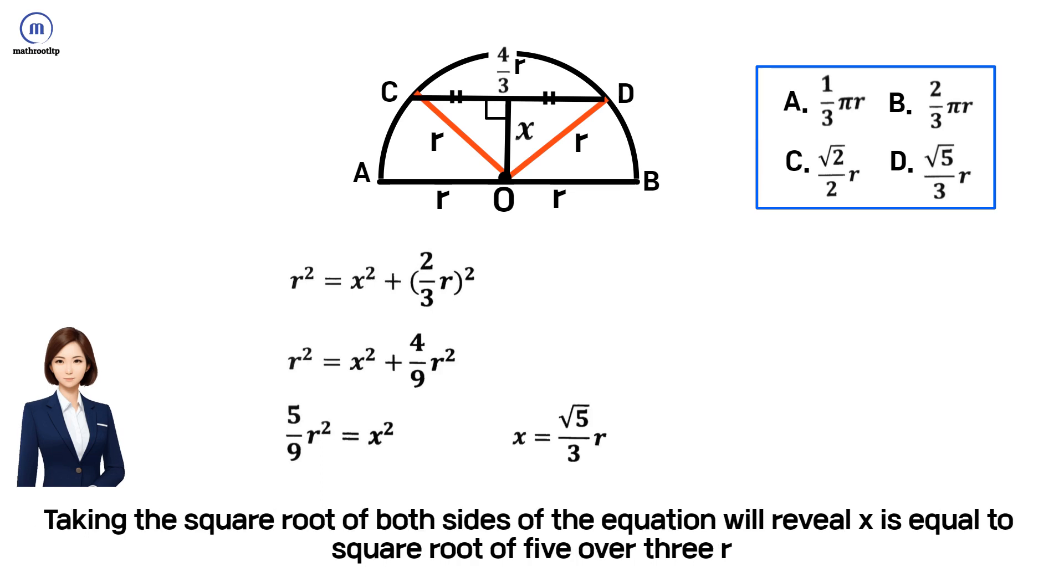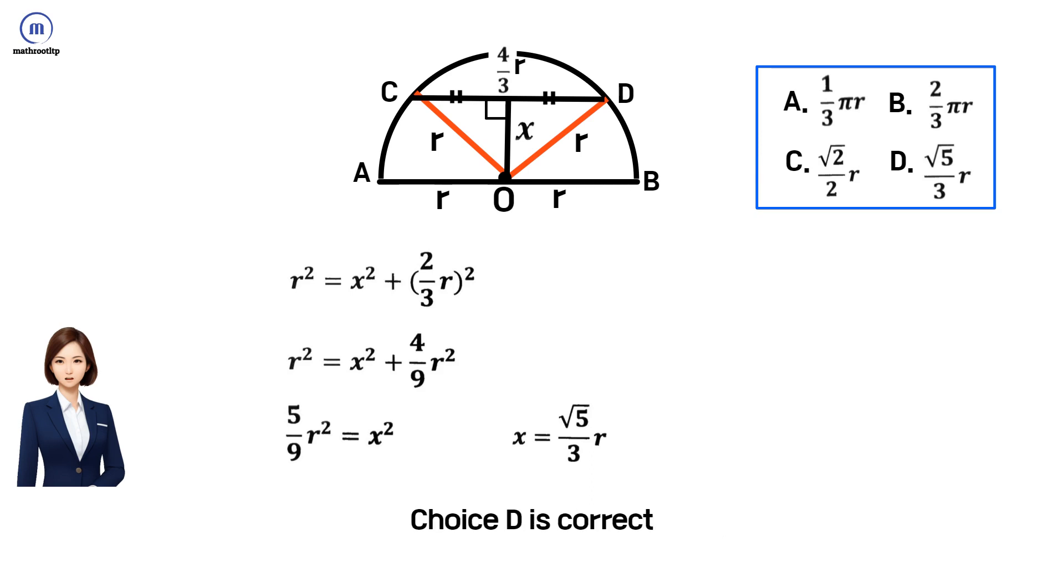Taking the square root of both sides of the equation will reveal x is equal to square root of five over three r. Choice D is correct. Thank you.